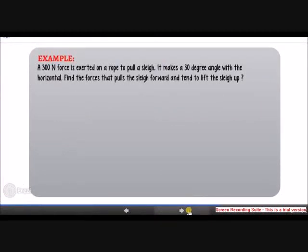Let's do an example together. A 300 Newton force is exerted on a rope to pull a sledge. It makes a 30 degree angle with the horizontal. Find the forces that pull the sledge forward and tend to lift the sledge up. We'll start by drawing a vector diagram.